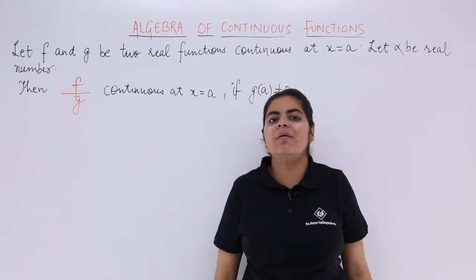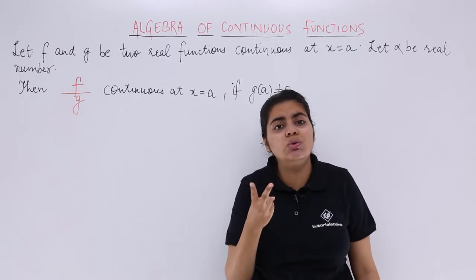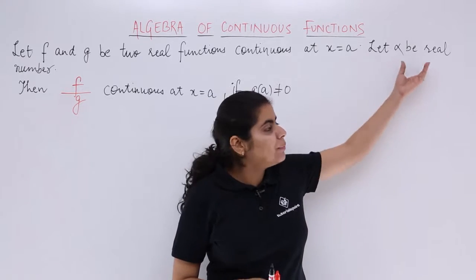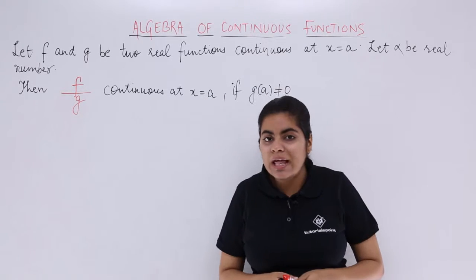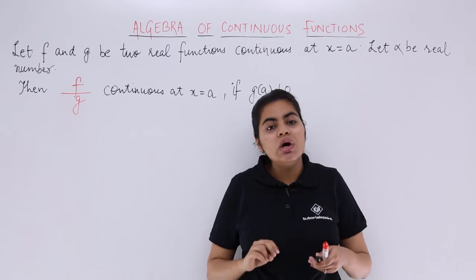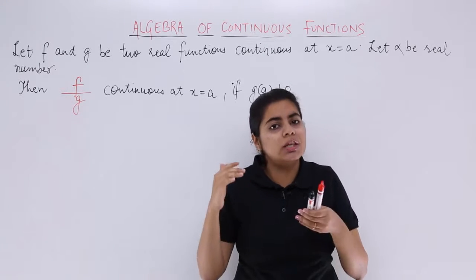The introduction part remains the same that we have f and g as two real valued continuous functions at x is equal to a, a being a real number. I know that we have two individual continuous functions, but in this video we have to see the division or the quotient.